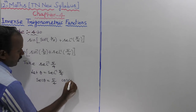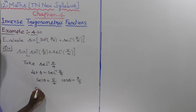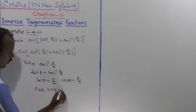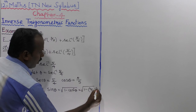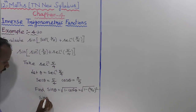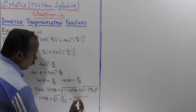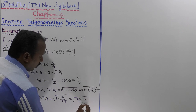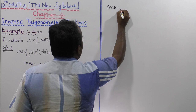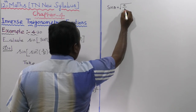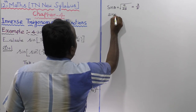Now, cos theta is equal to 1 over secant theta, so cos theta equals 4 by 5. Let us find sine theta. Sin theta is equal to root of 1 minus cos squared theta, that is root of 1 minus (4 by 5) squared, which equals root of 1 minus 16 by 25, equals root of 9 by 25, so sin theta equals 3 by 5.